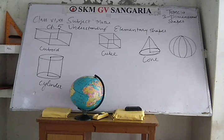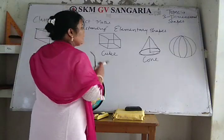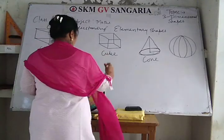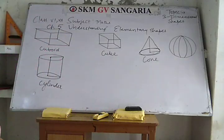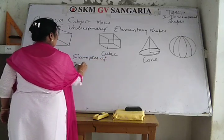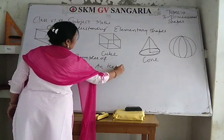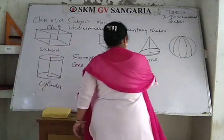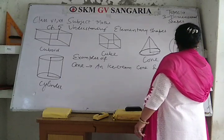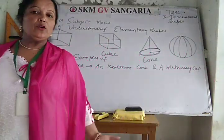The question asks you to give two new examples of each shape. For cone, examples are: an ice cream cone and a birthday cap. Also a mandi cone — that is also a cone.